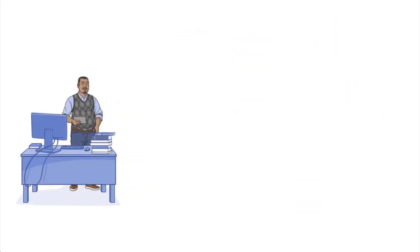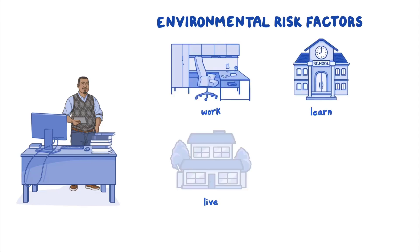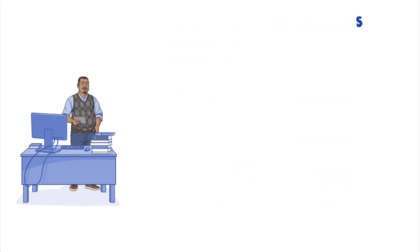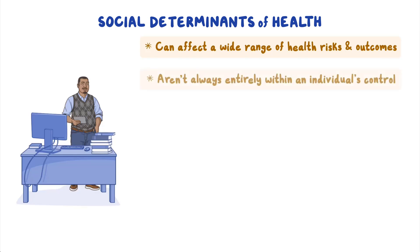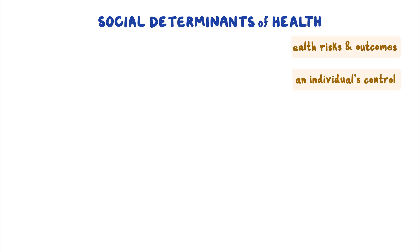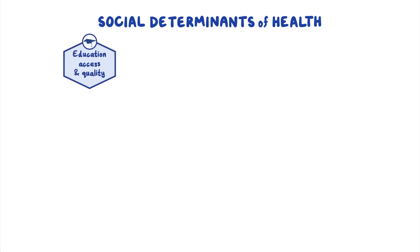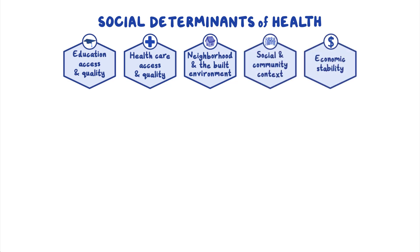A person's health can also be influenced by environmental risk factors in environments where people work, learn, live, and play. These social determinants of health can affect a wide range of health risks and outcomes and aren't always entirely within an individual's control, but education and public health initiatives can help address them. There are five main categories of social determinants of health: education access and quality, healthcare access and quality, neighborhood and the built environment, social and community context, and economic stability.